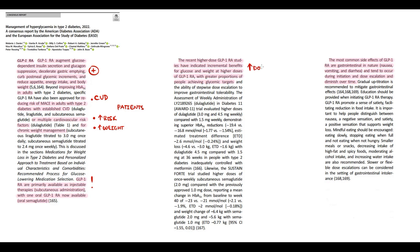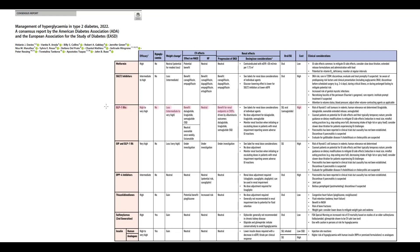Increasing dosage of GLP-1 receptor agonists causes an increase in their effect, which is logical. And also we can see GLP-1 receptor agonists as safe drugs — usually they cause just gastrointestinal side effects such as nausea or vomiting. The risk of side effects increases with an increase in dosage. GLP-1 receptor agonists are very similar to SGLT2 inhibitors based on their beneficial effects. These two classes of drugs are the first-line drugs for patients with diabetes and cardiovascular-renal pathology.